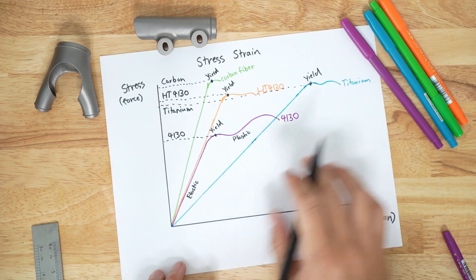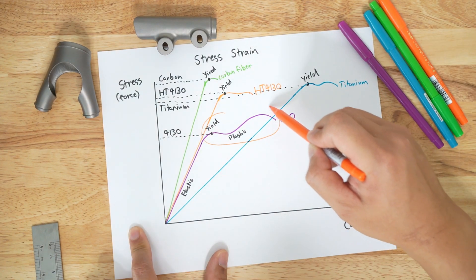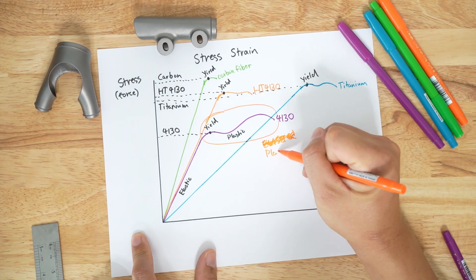Steel is neither the strongest, stiffest, nor the most compliant material. Its true magic lies in its large plastic deformation region. More on that later.